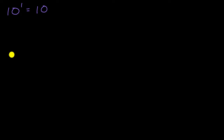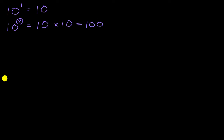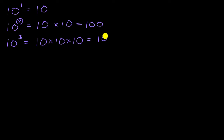In another video, we introduced ourselves to the idea of powers of 10. We saw that 10 to the first power is just one 10. 10 to the second power means we take two 10s and multiply them, giving us 100. 10 to the third power is three 10s multiplied together, equal to 1,000 — one followed by three zeros. Now in this video, we'll think about patterns when we multiply or divide arbitrary numbers by powers of 10.